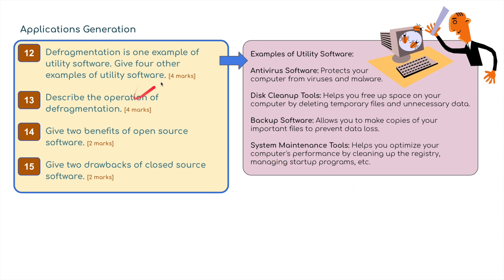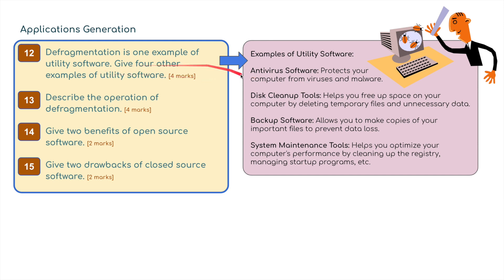Question twelve: defragmentation is one example of utility software - give four other examples. Antivirus software protects your computer from viruses and malware. Disk cleanup tools help free up space by deleting temporary files and unnecessary data. Backup software allows you to make copies of important files to prevent data loss. System maintenance tools help optimize your computer's performance by cleaning up the registry, managing startup programs, and various other tasks. So four different examples for four marks.